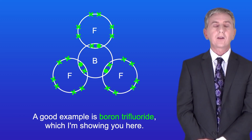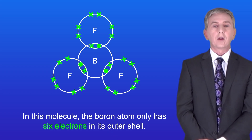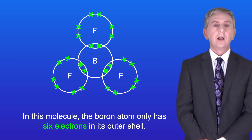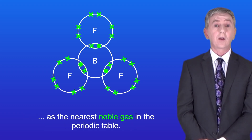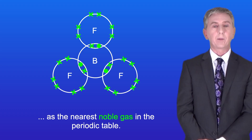A good example is boron trifluoride. In this molecule the boron atom only has six electrons in its outer shell, so it does not achieve the same electron configuration as the nearest noble gas in the periodic table.